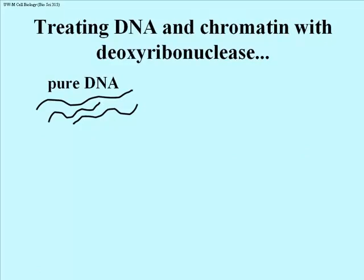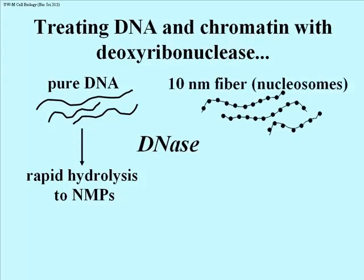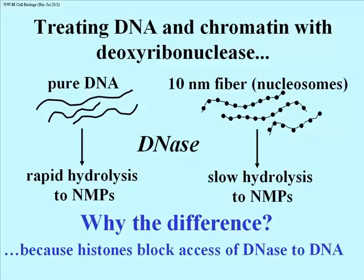Let's analyze what happens if you treat pure DNA with the enzyme deoxyribonuclease — an enzyme that catalyzes hydrolysis of the phosphodiester bonds. If you treat pure DNA with DNase, you get rapid hydrolysis down to nucleotide monophosphate breakdown products: AMP, CMP, TMP, GMP. But if you take the 10 nanometer fibers — the nucleosome beads on a string structures — and treat them with DNase, they will undergo hydrolysis, but relatively slowly. Nucleotide monophosphates accumulate slowly, and you won't get complete hydrolysis. It's because in the 10 nanometer fiber, the histone proteins are blocking the access of DNase to DNA, protecting the DNA from digestion.